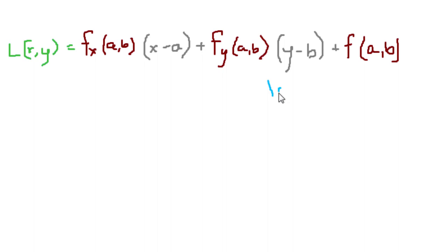L(x, y) instead of L(x) is equal to fx, the partial derivative at (a, b), times (x minus a), plus fy, the partial derivative, times (y minus b), plus f(a, b). This is equal to the surface for points near point (a, b).